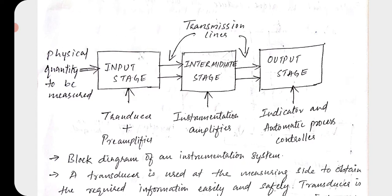The first one is this block diagram. You can see that it has three different stages: input stage, intermediate stage, and output stage. The input stage is provided with the physical quantity to be measured. Examples of physical quantities include temperature — the temperature of a room or your surroundings — which is a physical quantity.